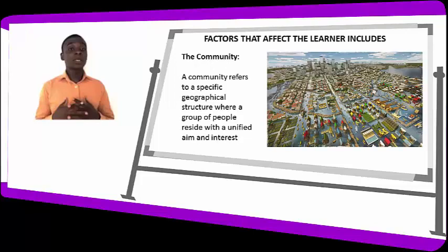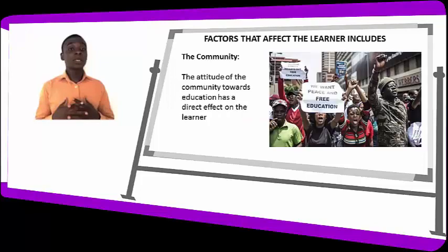The school environment includes teaching materials, classrooms, laboratories, teaching aids, and instructional materials. Every structure and component that makes up the school constitutes the school environment. When the school environment is not ideal for learning, it can also adversely affect the learners. Number four is the community — a group of people who live together in a specific geographical area with a unified aim and interest. The attitude of the community towards education has a direct effect on learners.